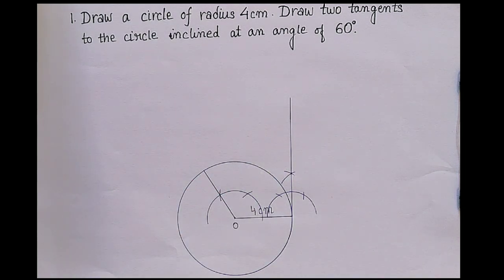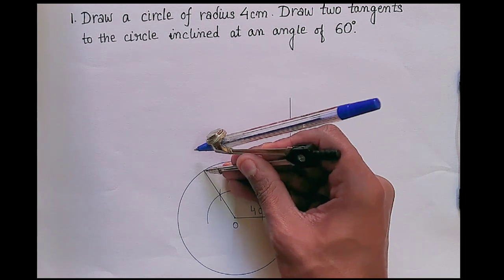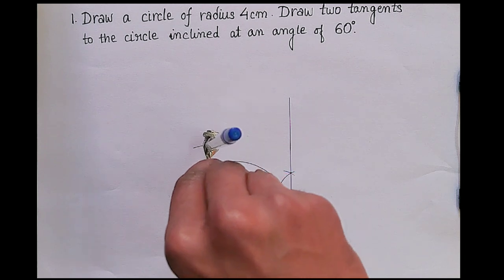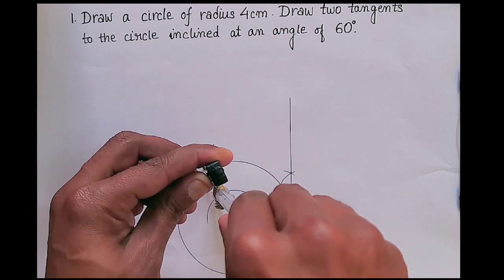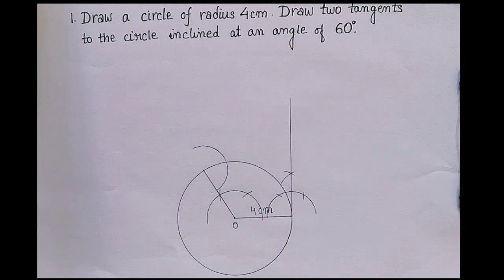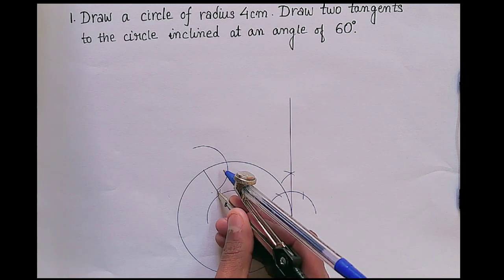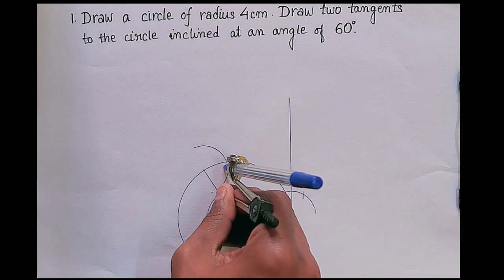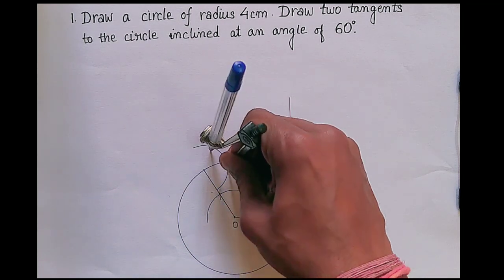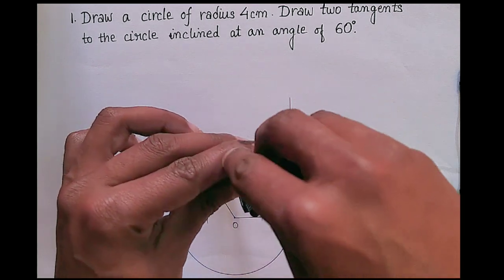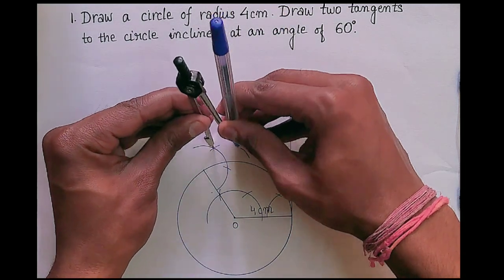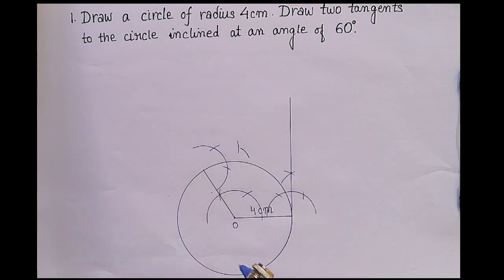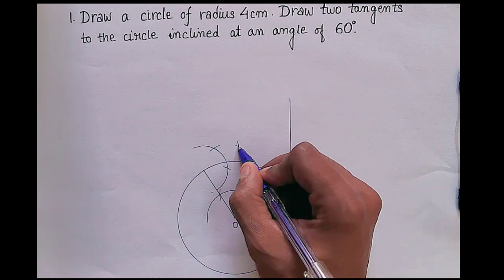Same way, we have to draw 90 degrees from this point. Again draw a semicircle. Then from this point draw an arc — first one will be 60 degrees, second one will be 120 degrees. Then without changing the measurement, draw 90 degrees.